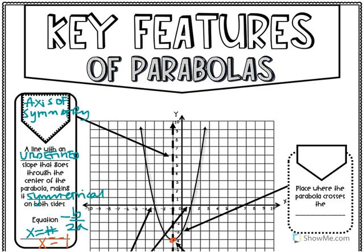The arrow on the right is pointing to the y-intercept — the place where the parabola crosses the y-axis. To find it algebraically, plug in zero for x and solve for y. In this example, the parabola passes through the point (0, -3), so our y-intercept is (0, -3). You can make these colorful, draw arrows, just make sure everything is labeled correctly.